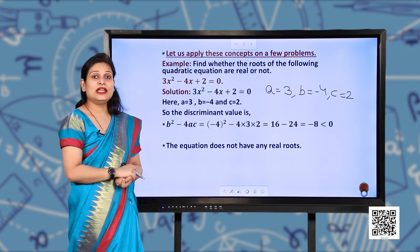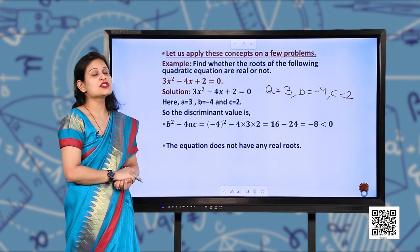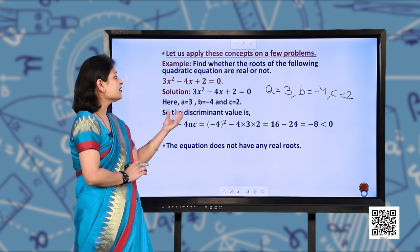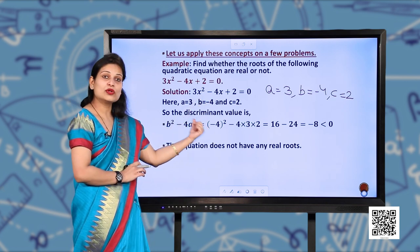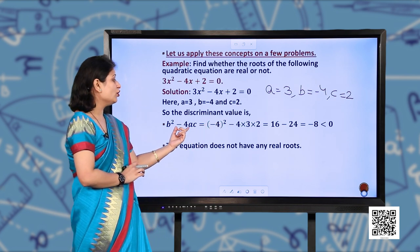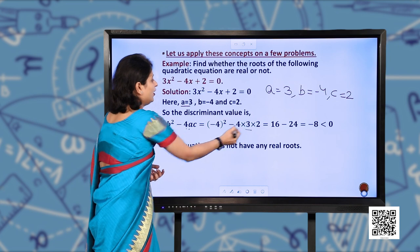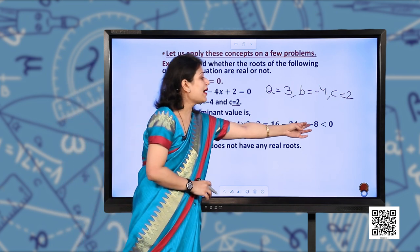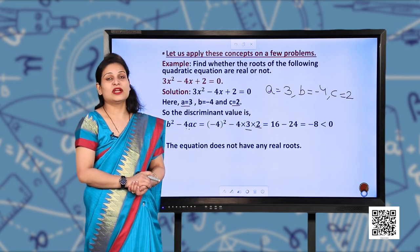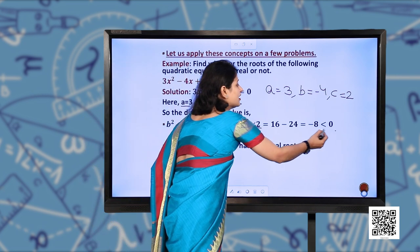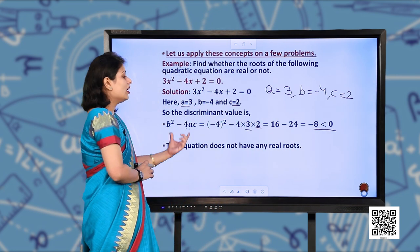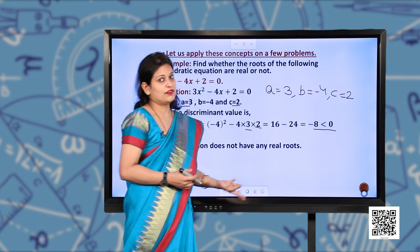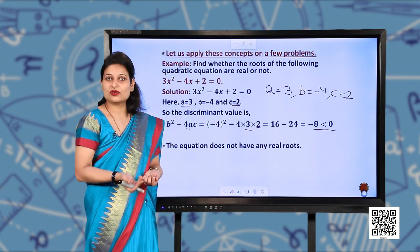Now D equals B² minus 4AC. Substituting: B² minus 4AC gives minus 4 squared minus 4 into 3 into 2. After solving, you get minus 8. Since minus 8 is less than 0, the discriminant is negative. Therefore, the equation does not have any real roots — the roots will be imaginary. Real roots do not exist.